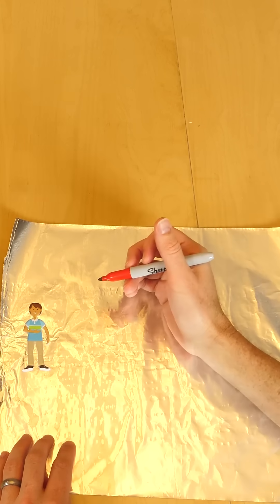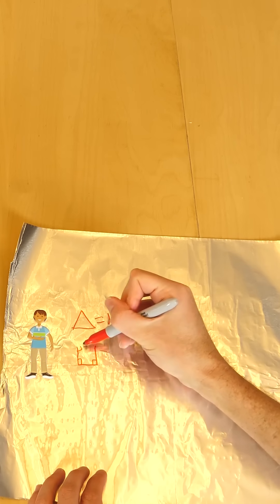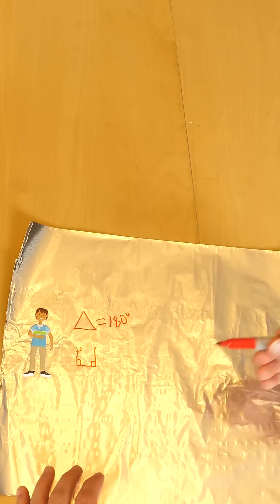Now, Bob is smart and remembers his Euclidean geometry. He knows that if you draw a triangle, the angles always equal 180 degrees. And you definitely can't draw a triangle with three 90-degree angles.